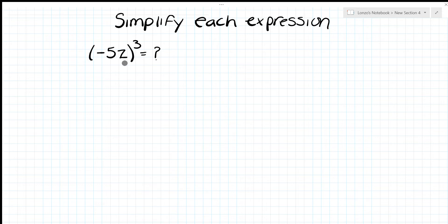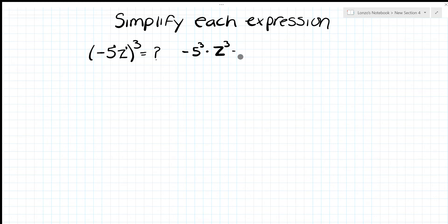Now simplify expressions. We have (negative 5z)^3. There's an invisible exponent of 1 on each. Raising to the third: negative 5 to the third is negative 125, and z to the third is z^3. Final answer: negative 125z^3.